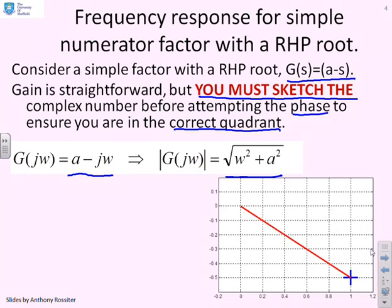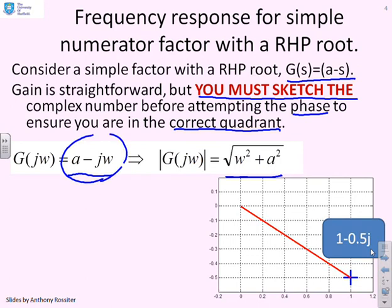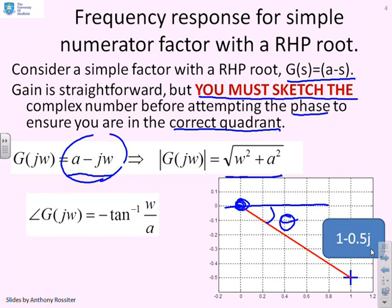What about the phase? I've plotted this complex number — a particular example 1 - 0.5j — which has the same structure as the complex number given. Marking the real axis and the origin, the phase is clearly the angle shown, between 0 and -90 degrees. So you know you're looking for an answer between 0 and -90. By inspection, the phase is -tan⁻¹(ω/a), where ω is the imaginary part and a is the real part. Taking the normal tan inverse result between 0 and 90, the minus sign out front makes it between 0 and -90.